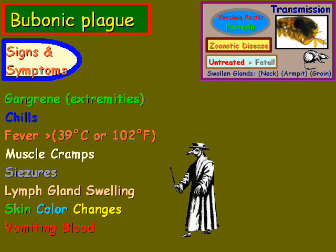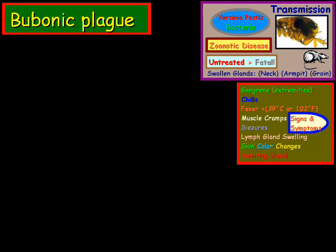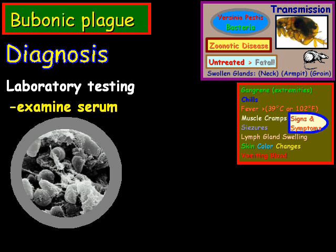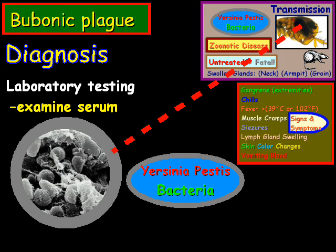It's a very gruesome disease to have and die of. How exactly is it diagnosed? Well, there's laboratory testing. What they'll do is examine a serum and place it in a culture test to test for the bacteria and see if it has the Y. pestis bacteria. And if it does, then you have the bubonic plague.